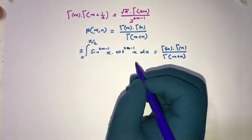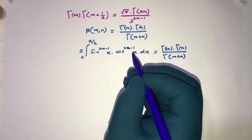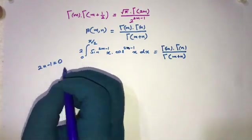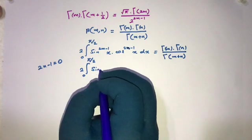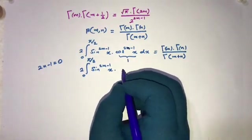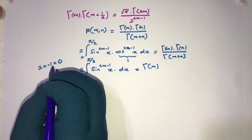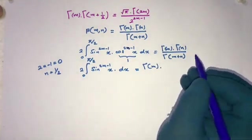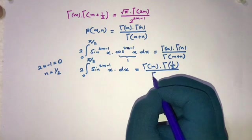Now I am going to take 2n minus 1 equal to 0. If we take 2n minus 1 equal to 0, the cosine term becomes cosine to the power 0, which equals 1. So we can write 2 times the integral from 0 to pi over 2 of sine to the power 2m minus 1 of x, dx. From 2n minus 1 equal to 0, n equals one-half.